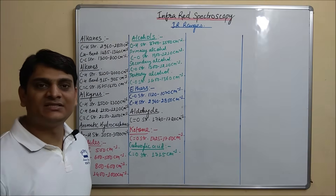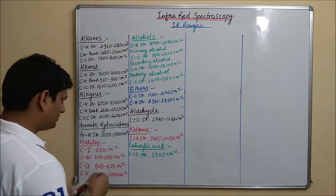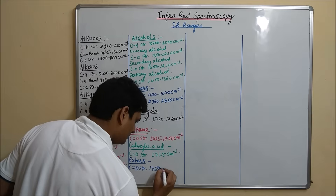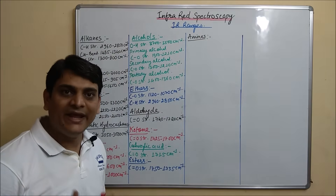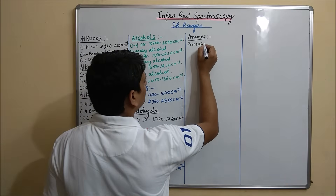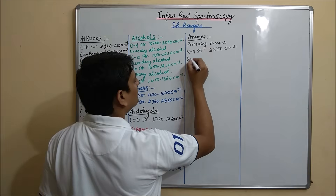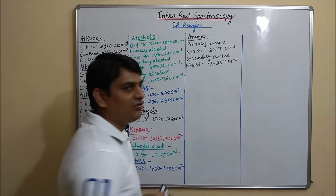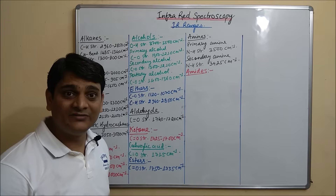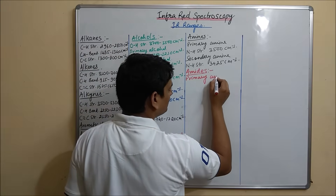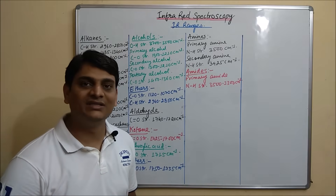Now coming to Amides and Amines. For primary Amide, C double bond O stretching is 1750 to 1735 cm inverse. For primary Amine, N-H stretching is 3500 to 3300 cm inverse. And for secondary Amines, N-H stretching is also 3500 to 3300 cm inverse.